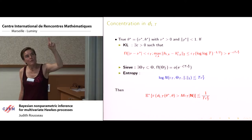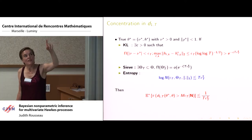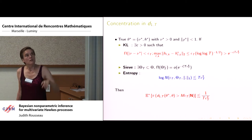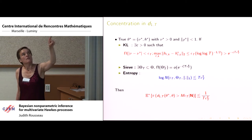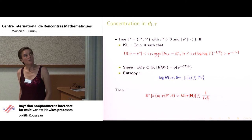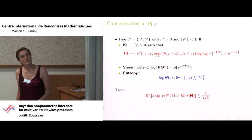There is one technical issue: we're losing a log-log T term, which is unusual — usually you lose a log T term. It's just a technical thing; I'm sure the log-log T shouldn't be there, but we didn't know how to get rid of it. That's the Kullback-Leibler condition.